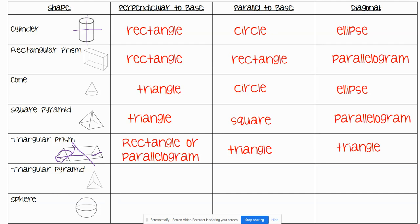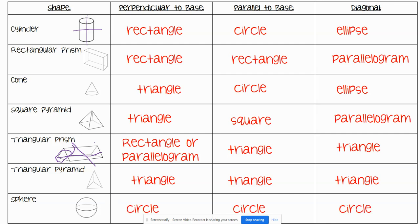For a triangular pyramid, no matter how you cut it — because every side is a triangle — you are going to get some sort of triangle. For a sphere, no matter how you cut it, you should always get a circle. Even when you cut diagonally, because a sphere is round on all sides, no matter what way you cut it, you are really cutting it straight through, which gives a perfect circle.